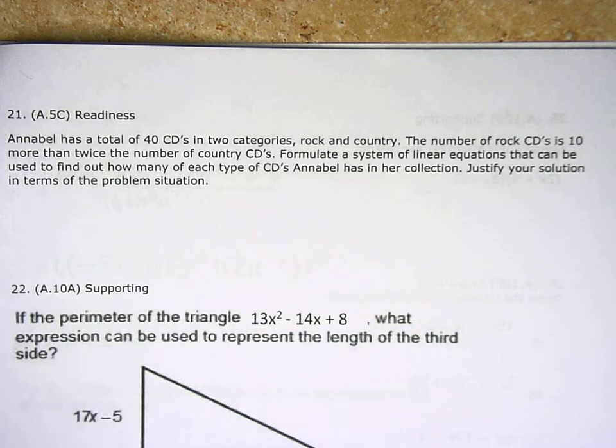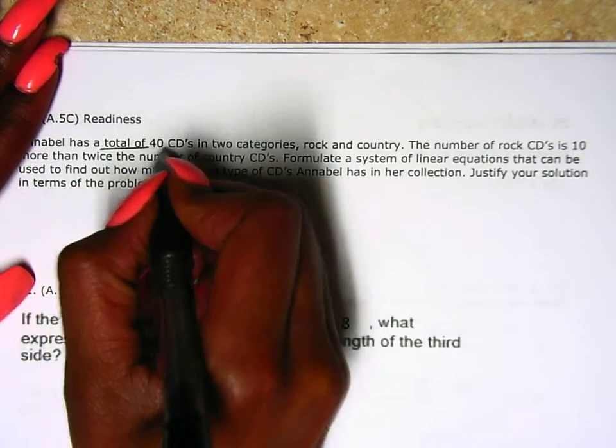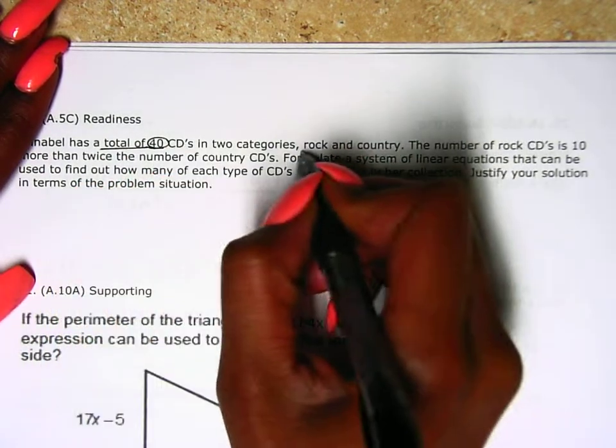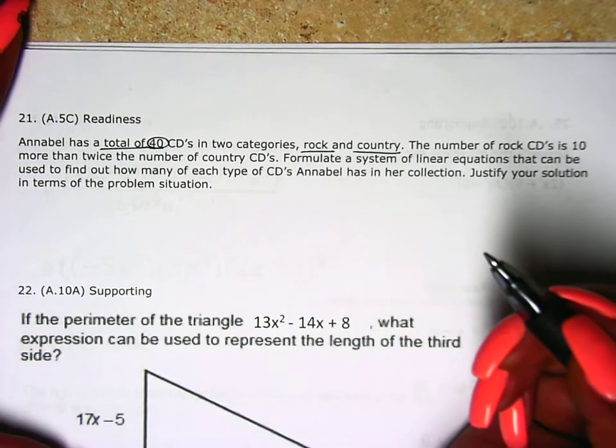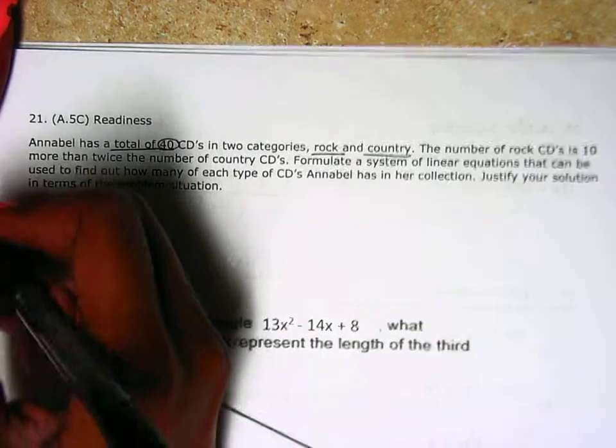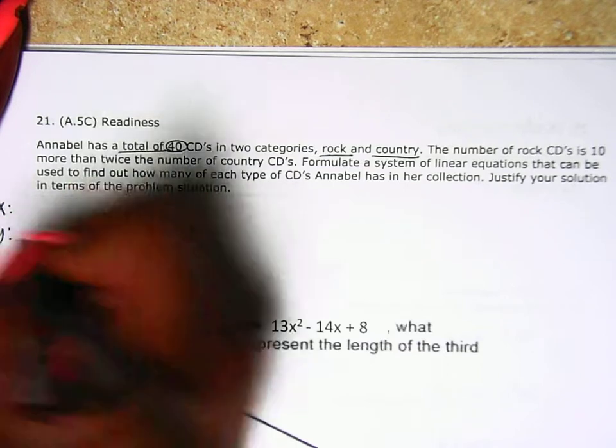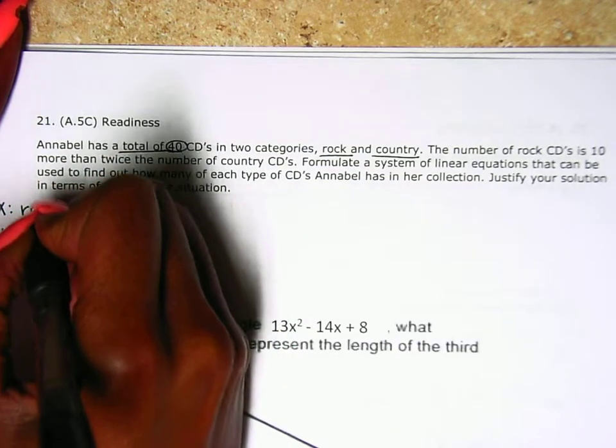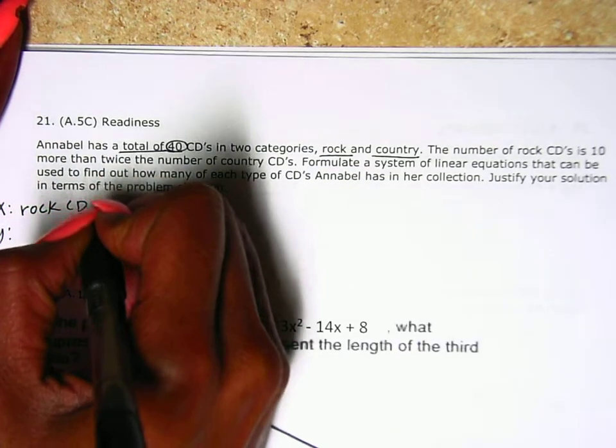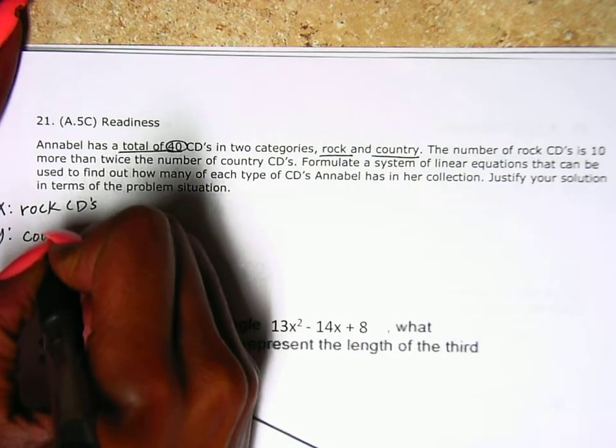So here, it says she has a total of 40 CDs in two categories, rock and country. The first thing I'm going to do is determine my variables, X and Y. X is going to represent rock CDs. Y is going to represent country CDs.